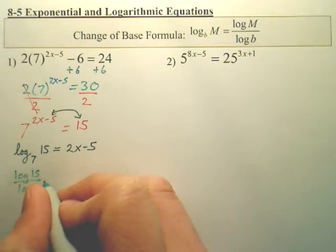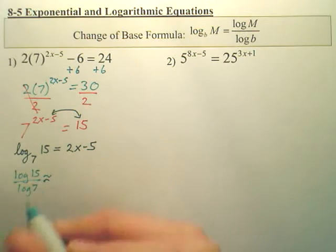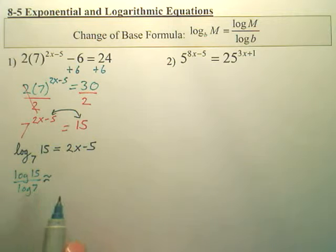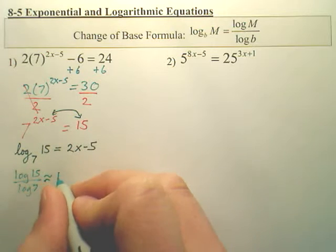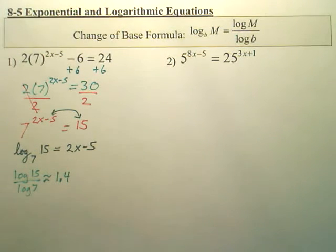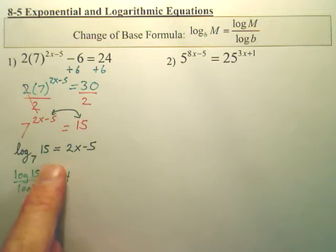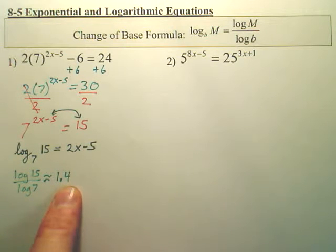This right here, which when you do that on a calculator, log 15 over log 7, if you had a calculator, what you would get is 1.4. That's what that would be equal to. So this would be changed to log 15 over log 7. That value is 1.4. I did it on the calculator earlier.